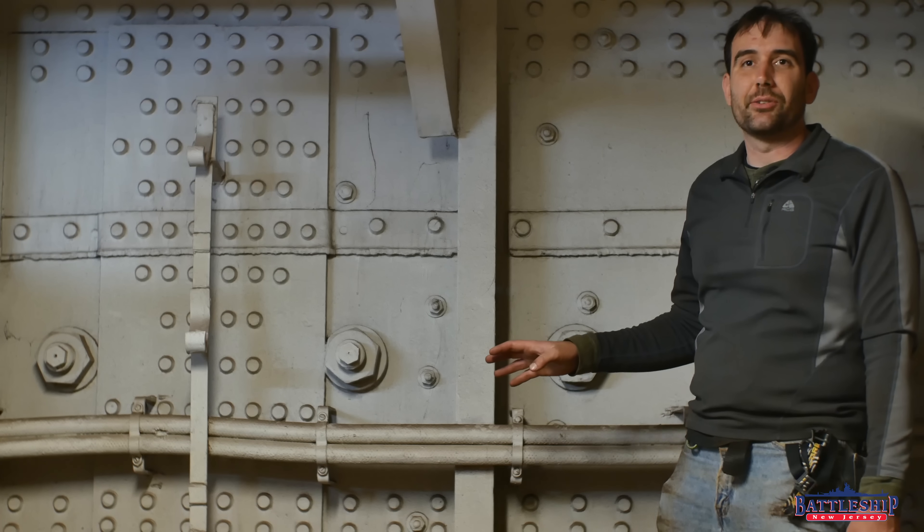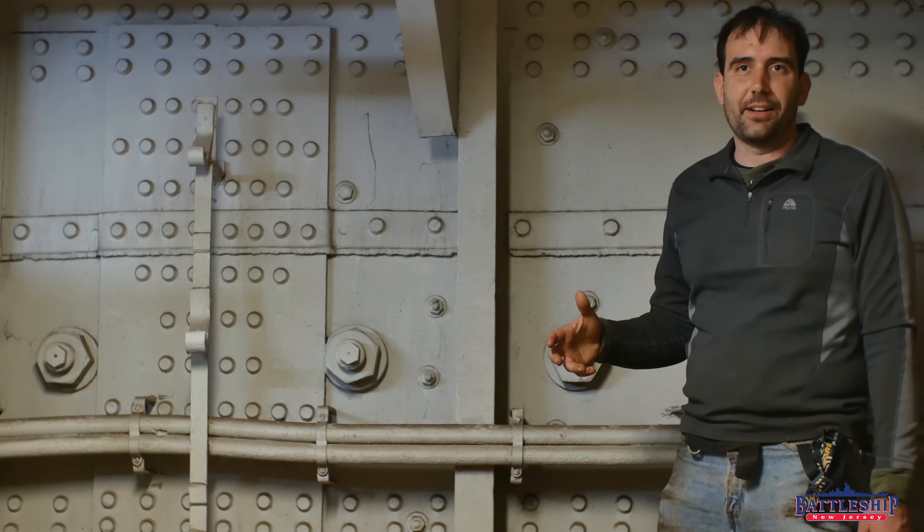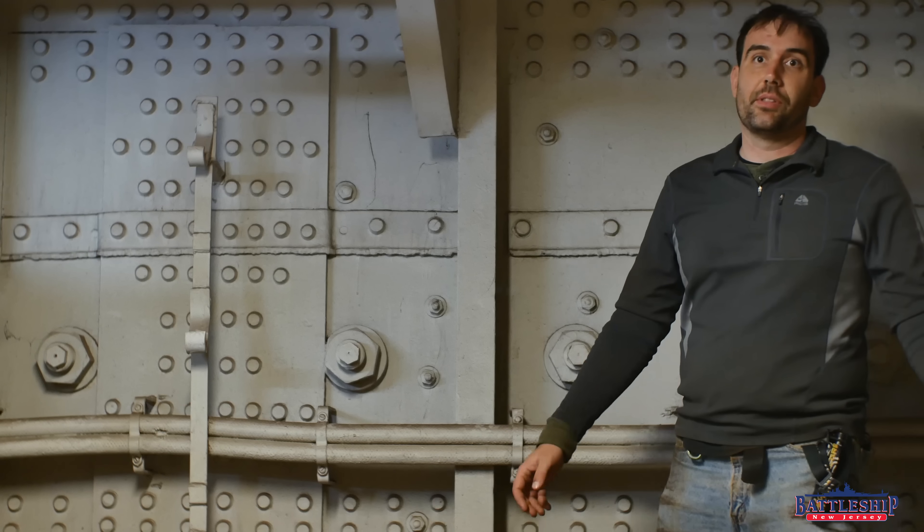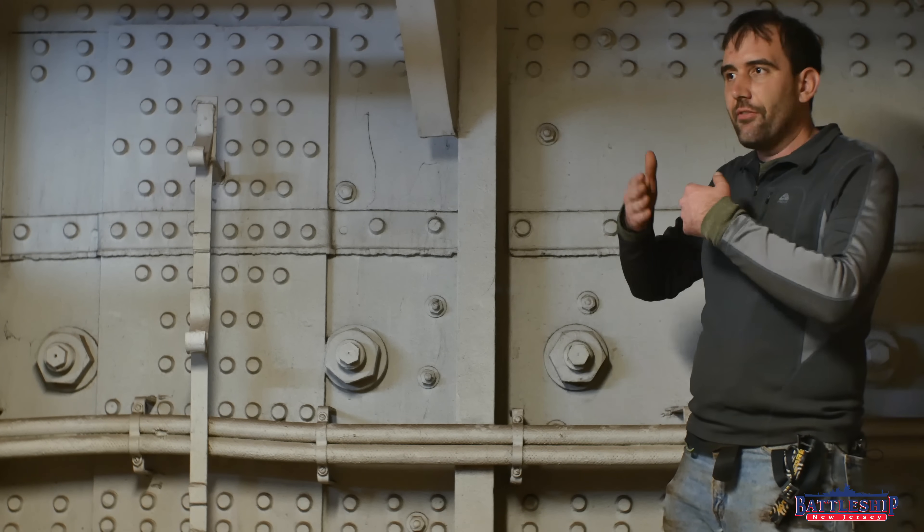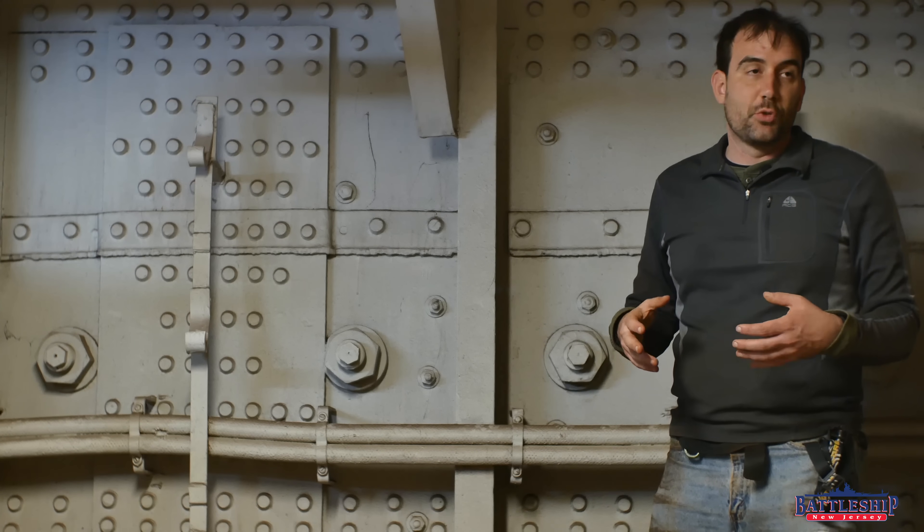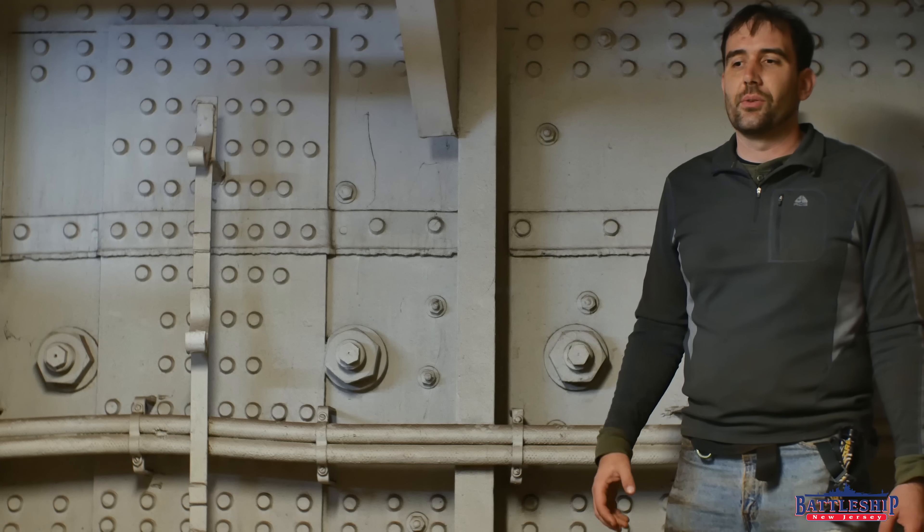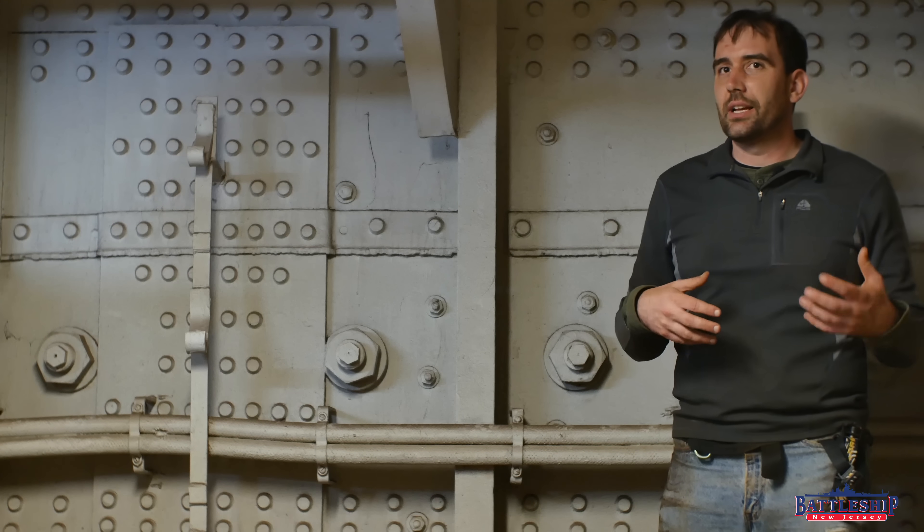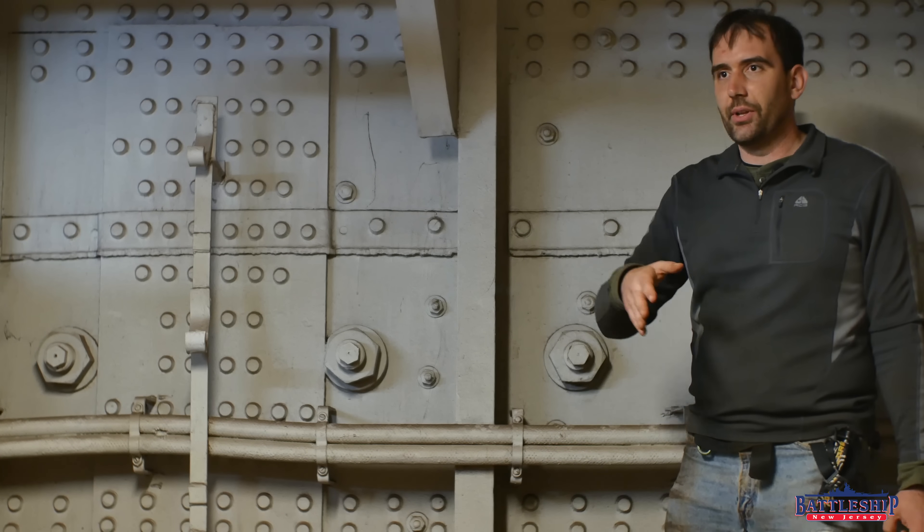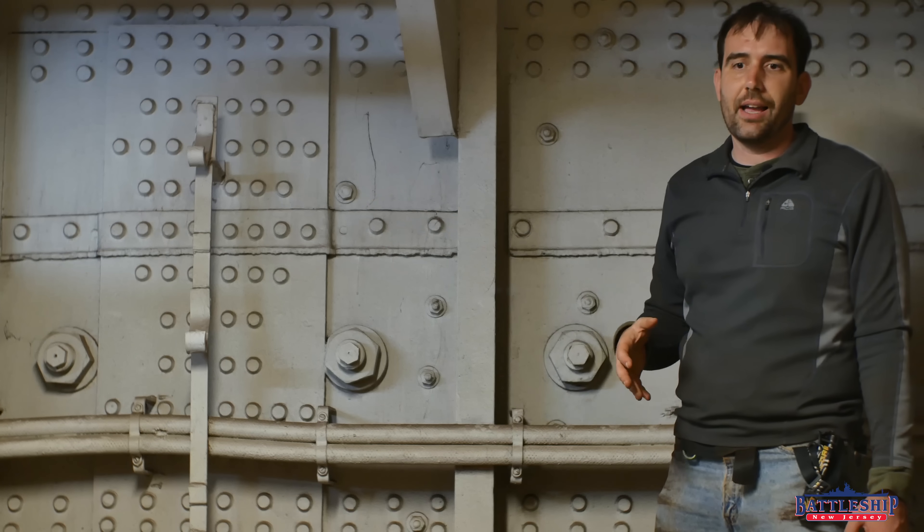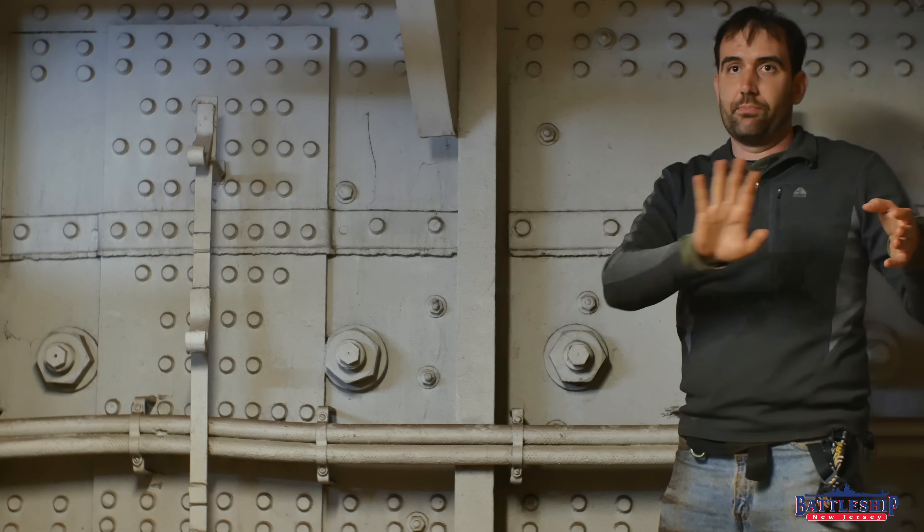Texas was the last American battleship built before the all or nothing armor scheme, which starts with USS Nevada and ends with the Iowa class battleships functionally. Older battleships like Texas have armor plating of different thickness trying to cover basically the whole hull of the ship so that smaller shells being fired at you, which are more likely to hit if you're at a range where they can, are going to be stopped.